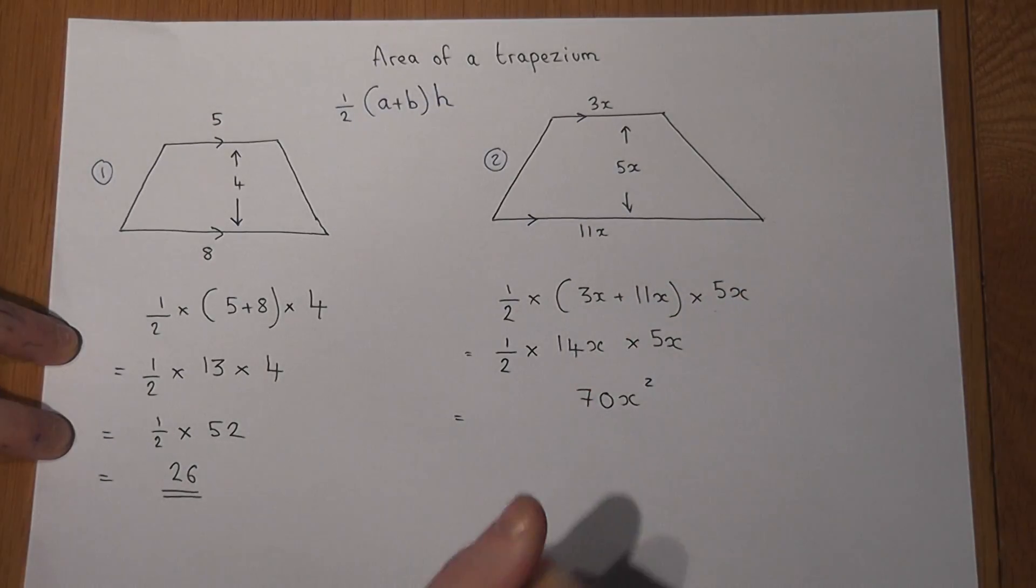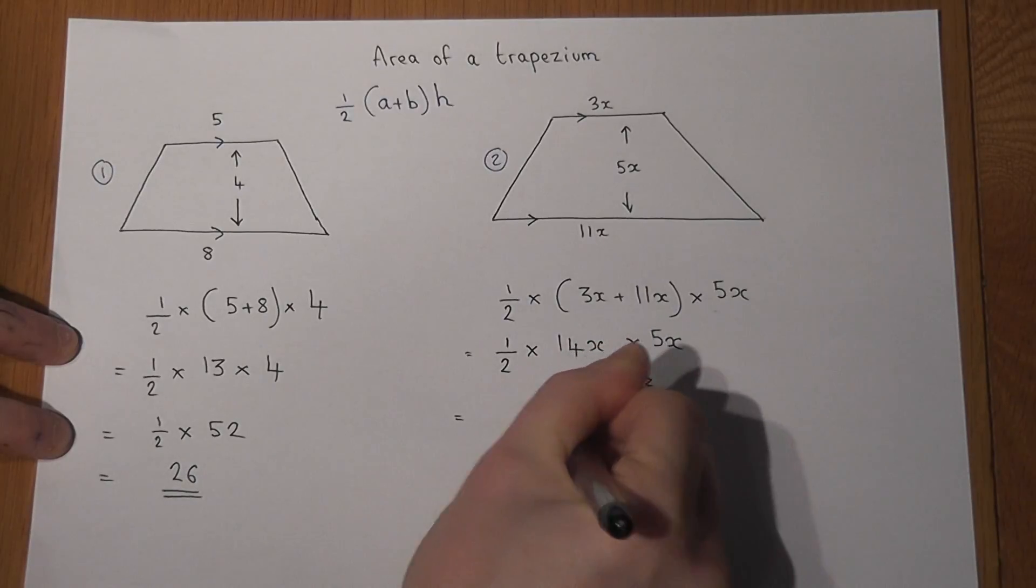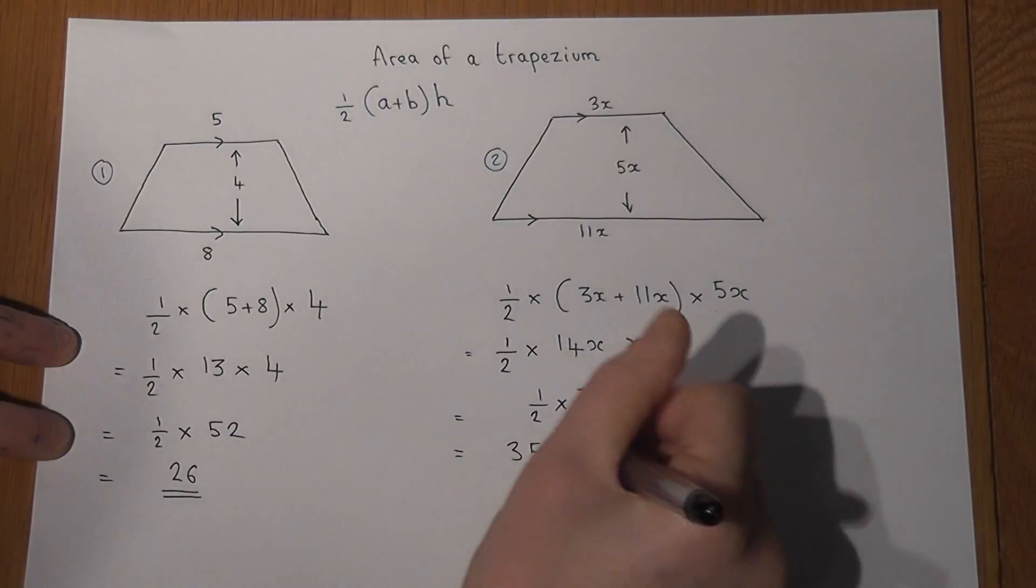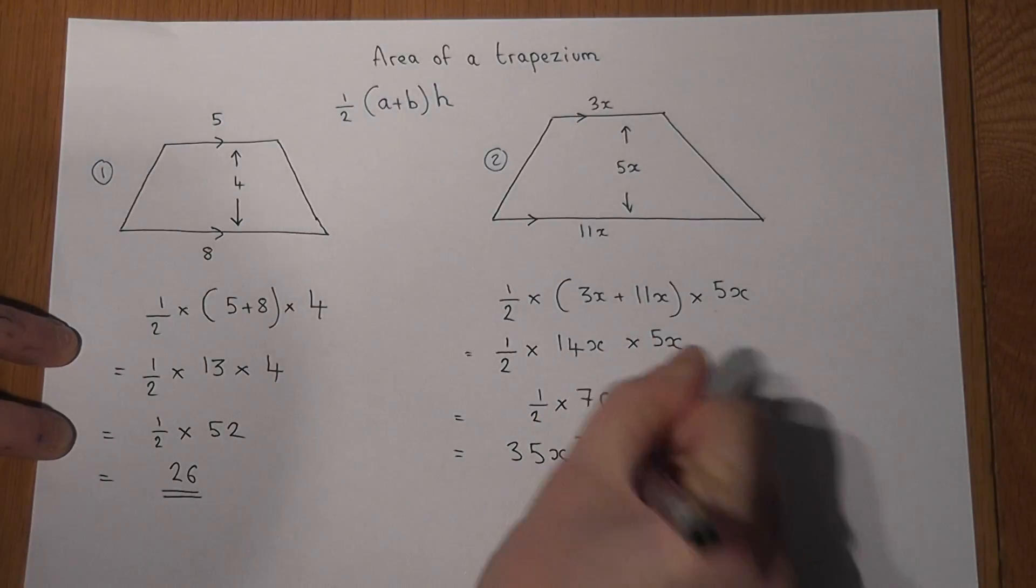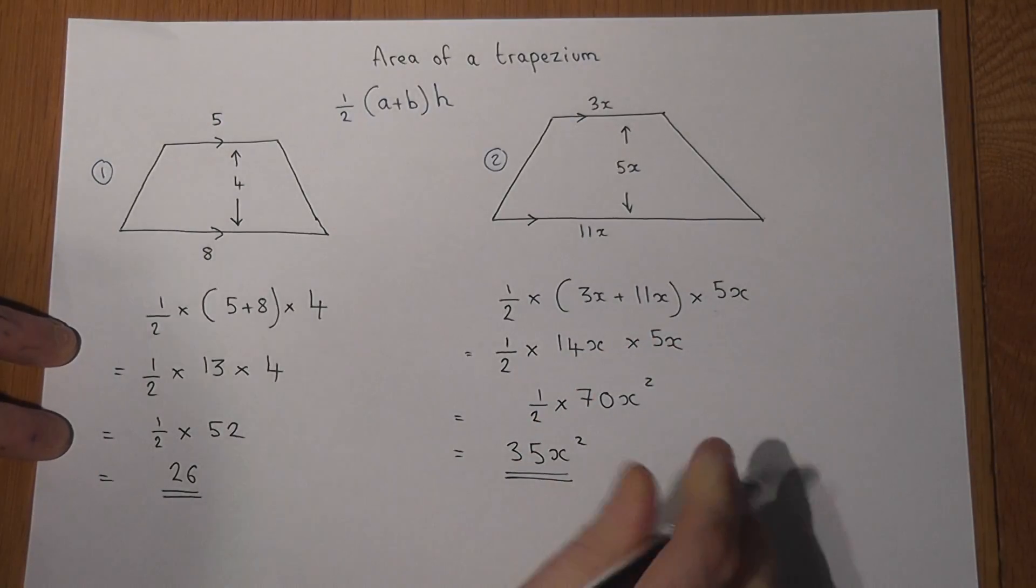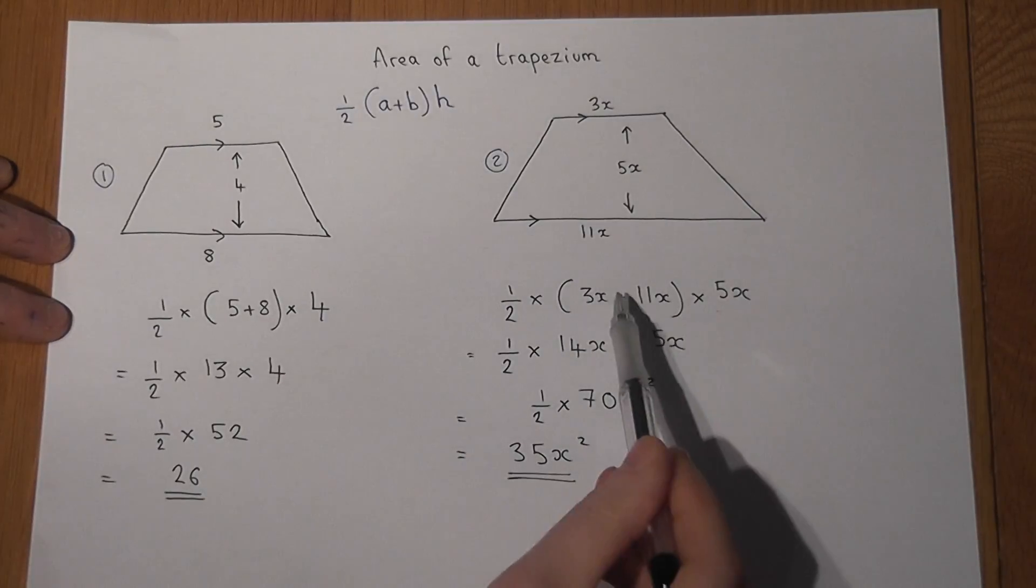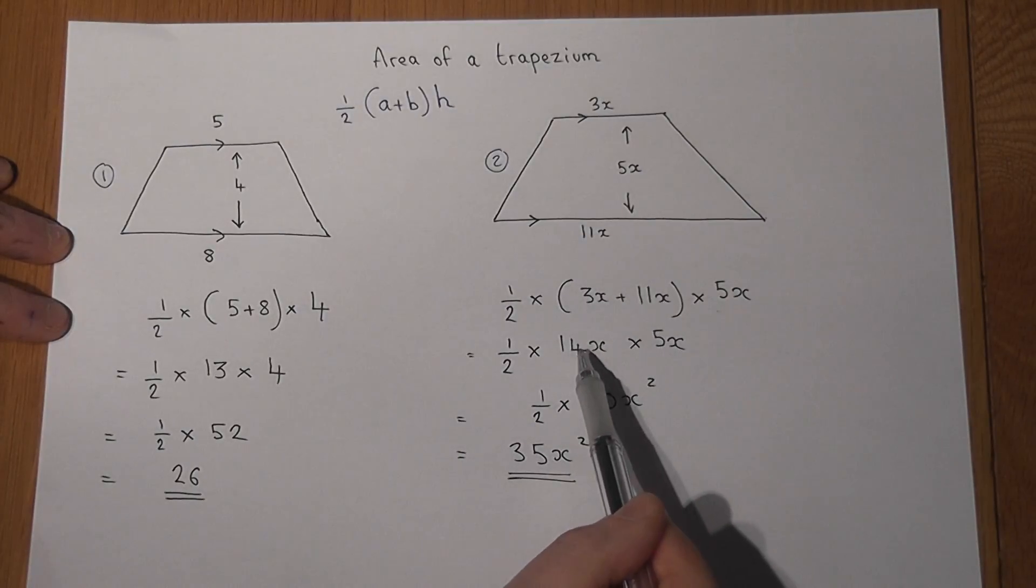So it's a half of 70x squared. Well, a half of 70 is 35, so the answer in terms of x is just 35x squared. And again, we used the formula, we worked out the bracket. I chose to do 14 times 5 first and then half.